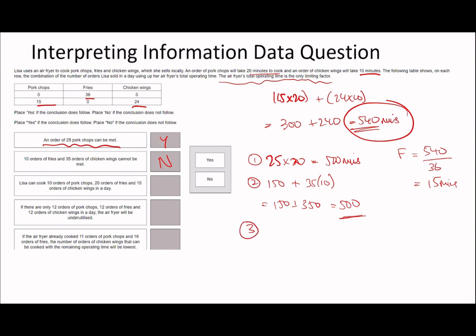For sub-question 3: Lisa can cook 10 orders of pork chops, 20 orders of fries and 15 orders of chicken wings. That's 200 minutes (10×20) plus 300 minutes (20×15) plus 150 minutes (15×10), totalling 650 minutes. Unfortunately she can't - she might be a great cook but she doesn't have the time.